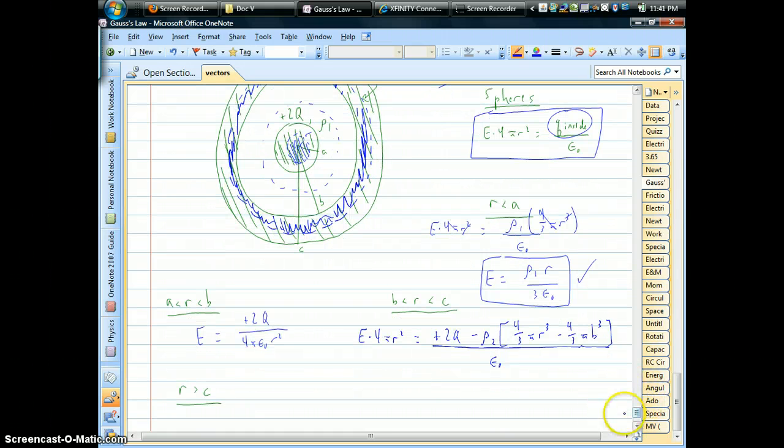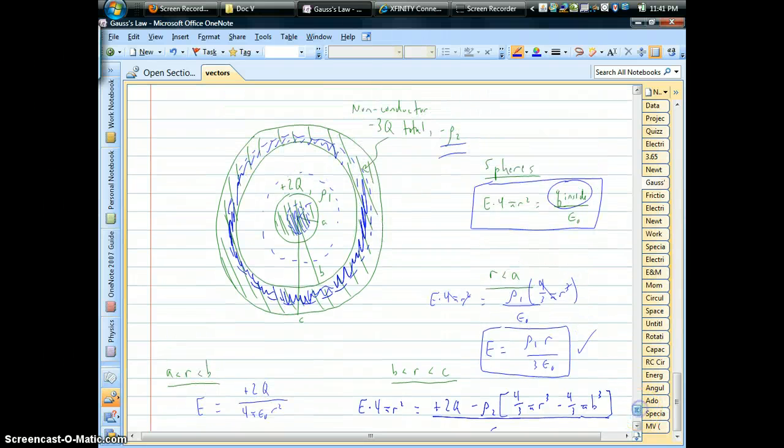And so you have that weird looking expression there. And if we just divided by 4π r squared, we'd have our electric field inside that non-conducting material, inside the shell.